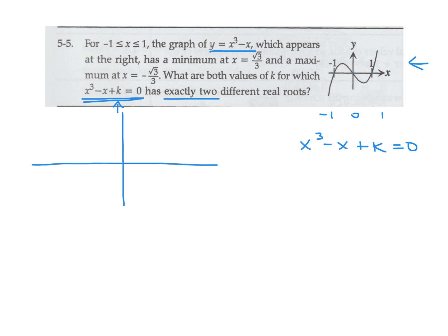If k is positive, the graph shifts up. I need to draw it so it only crosses the x-axis twice, since I want exactly two different roots — not three and not one. They told me the minimum occurs at root 3 over 3, so when the graph is shifted up, that point is still at x equals root 3 over 3. That's very helpful.